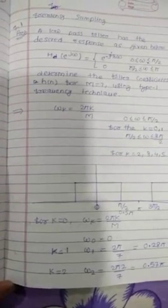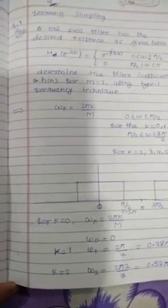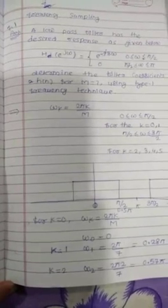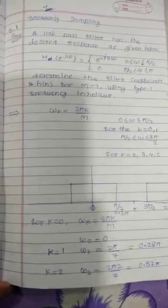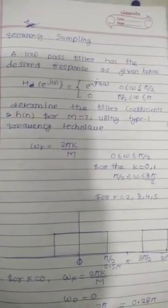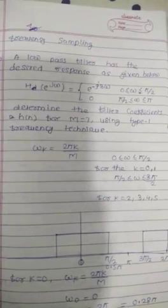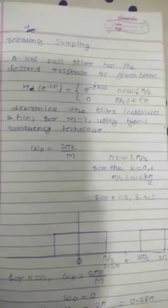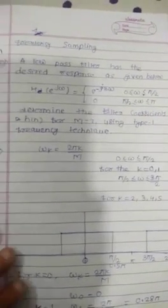Dear student, this is our lecture number 7, that is the frequency sampling. We are taking one problem based on the frequency sampling, that is a low pass filter has the desired response as given below. H of e to the power j omega equal to e to the power minus j3 omega, 0 to 0 less than omega less than pi by 2. Determine the filter coefficient h of n for the range m equal to 7 using type 1 frequency technique.